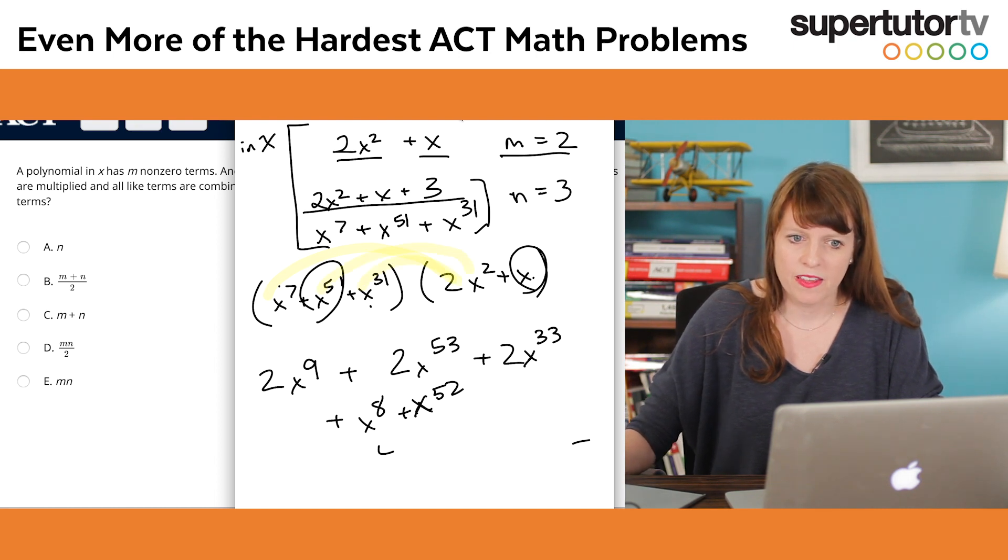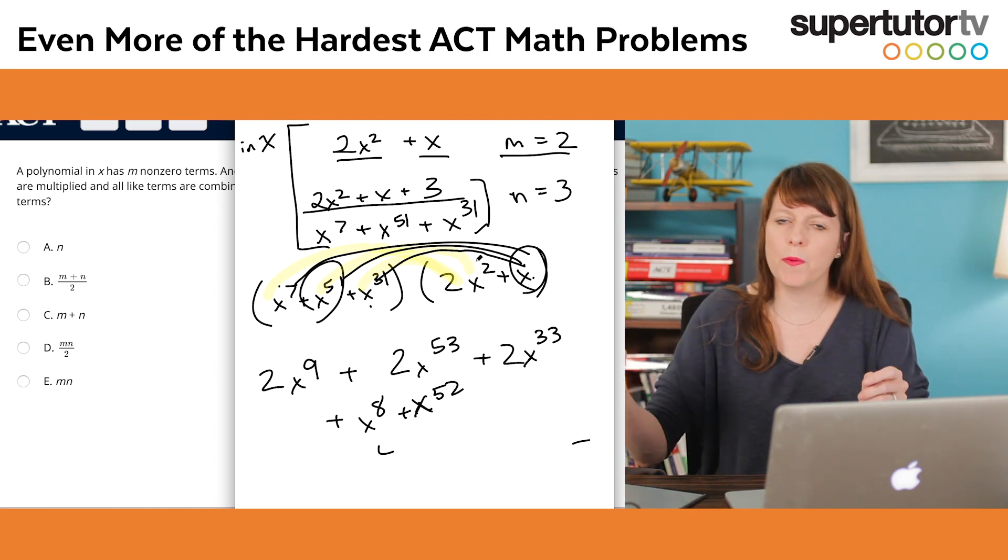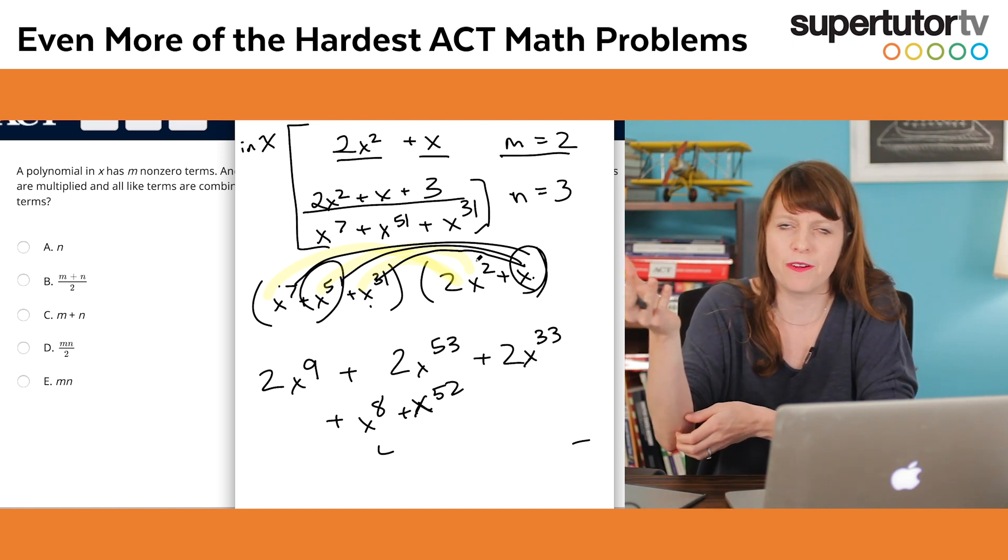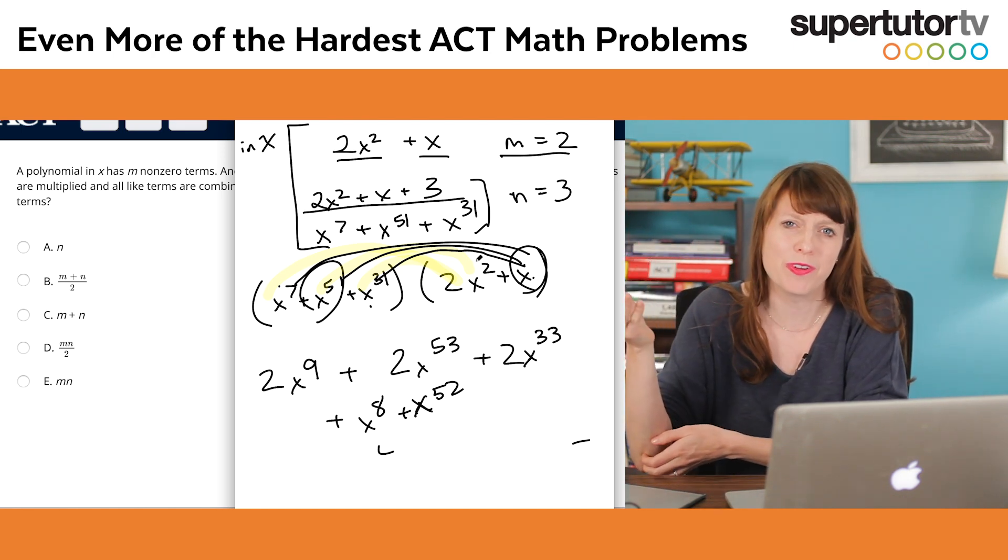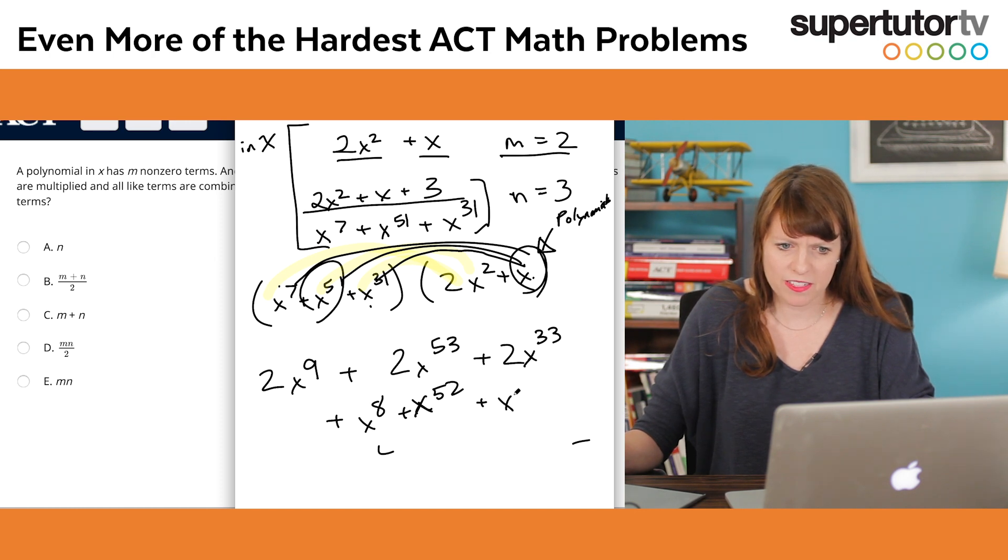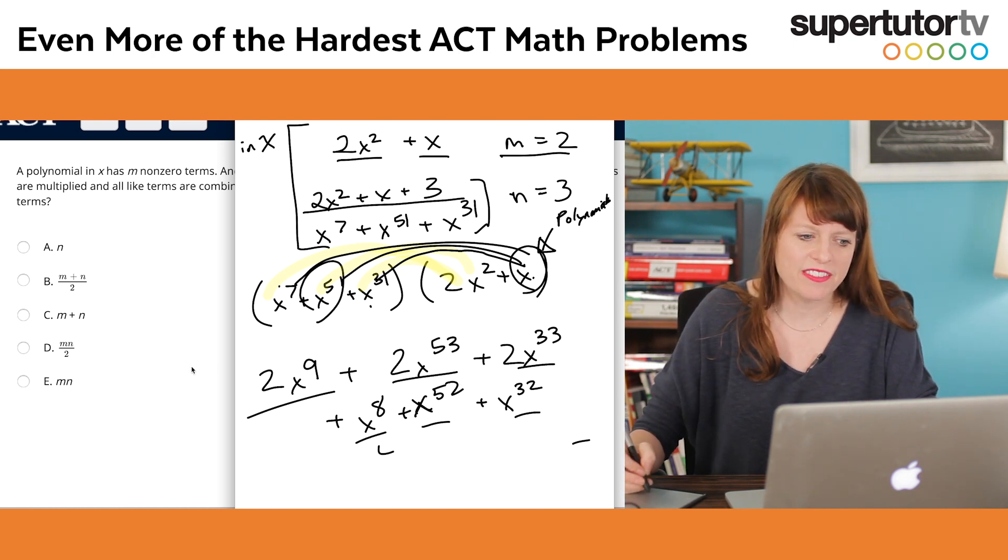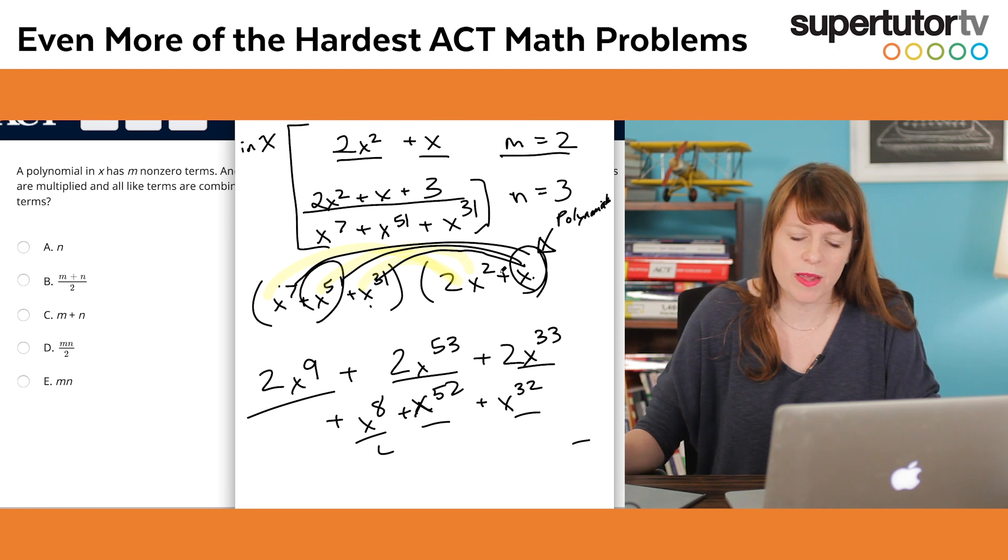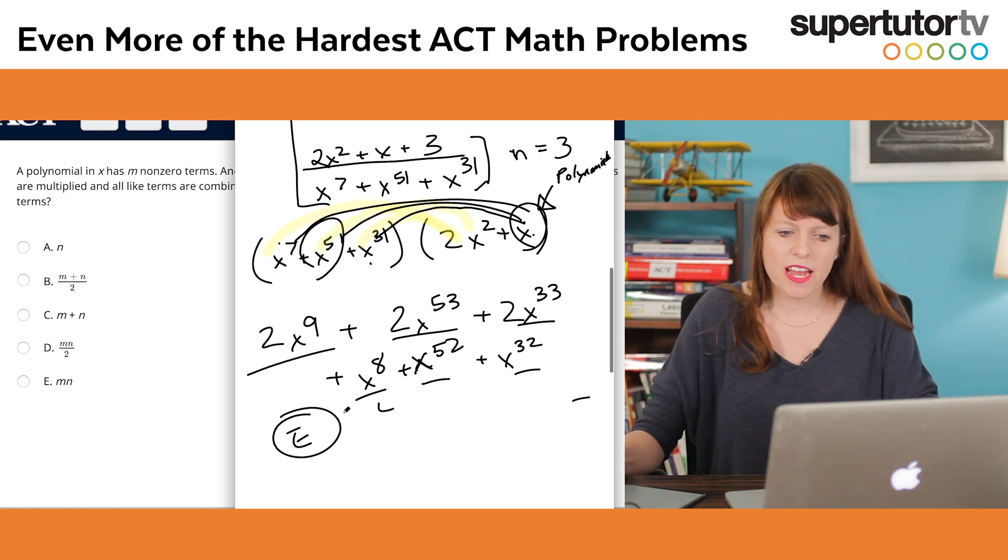And I get that times that is 2x to the 9th. Then I get 2x to the 53rd. You can see like nothing's collapsing here. And then we get plus 2x to the 33rd. And then I'm going to get these plus x to the 8th, x to the 52nd, and then this is going to be x to the 32nd. So you can see here, each one of these is unique. And I have 1, 2, 3, 4, 5, 6, 9, 0 terms. So that's going to be e. It's m times n because it's 2 times 3, which is 6. So our answer choice is e, and we're done.